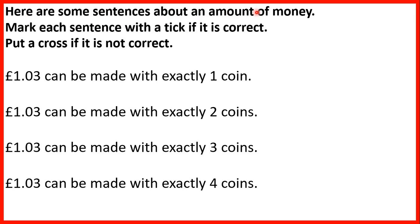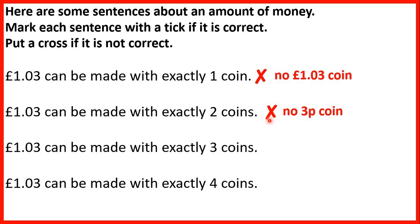Here are some sentences about an amount of money. Mark each sentence with a tick if it is correct, or a cross if it is not correct. £1.03 can be made with exactly 1 coin — that's not correct because there's no £1.03 coin. £1.03 can be made with exactly 2 coins — that's not correct either, because though we have a £1 coin, we do not have a 3-pence coin. £1.03 can be made with exactly 3 coins — that's true, because we have a £1 coin, a 2-pence coin, and a 1-pence coin. If we put these 3 coins together, we get £1.03.